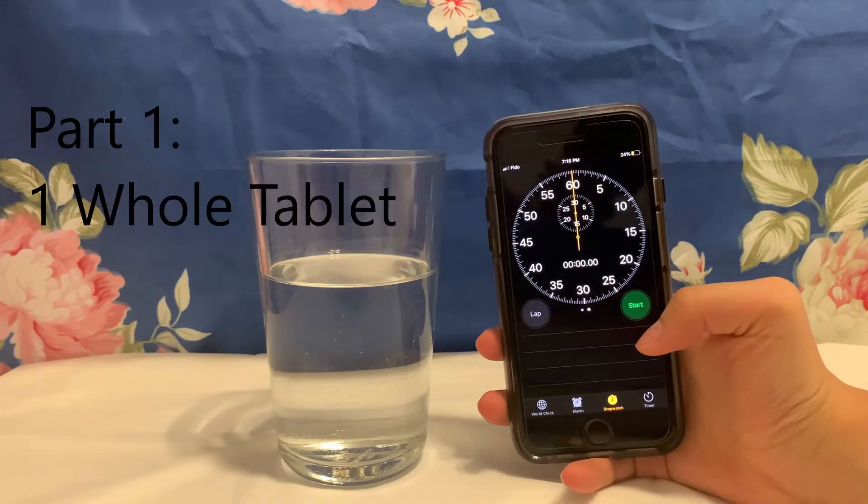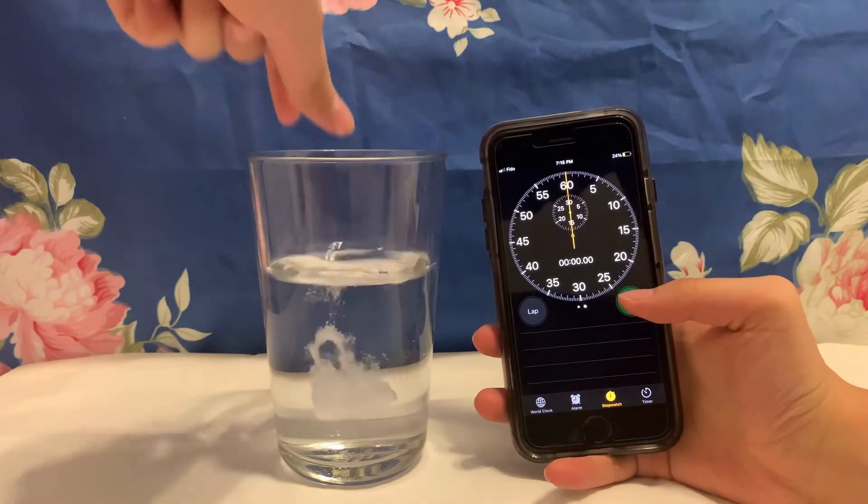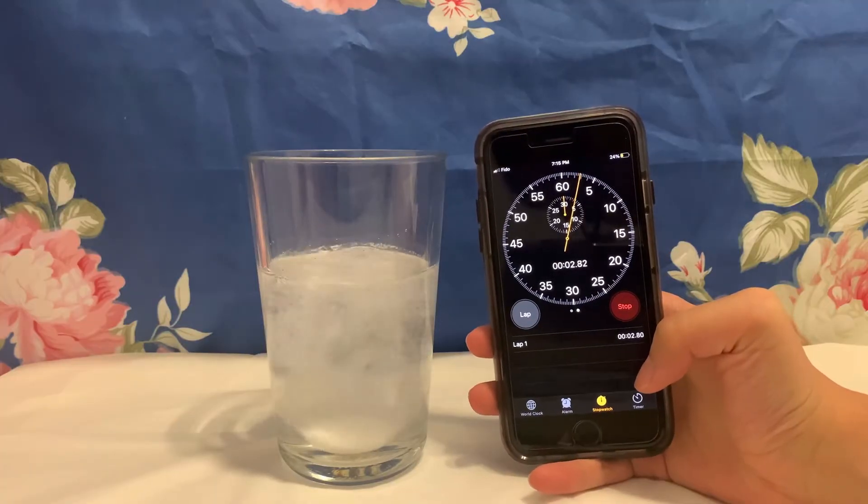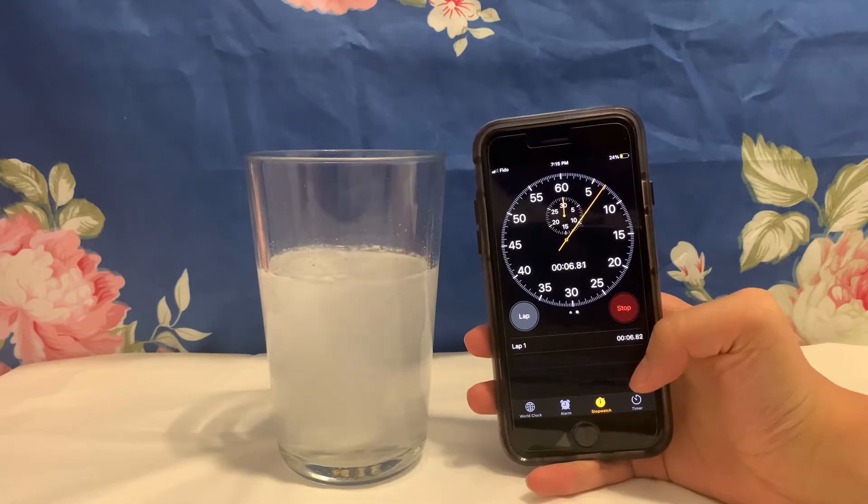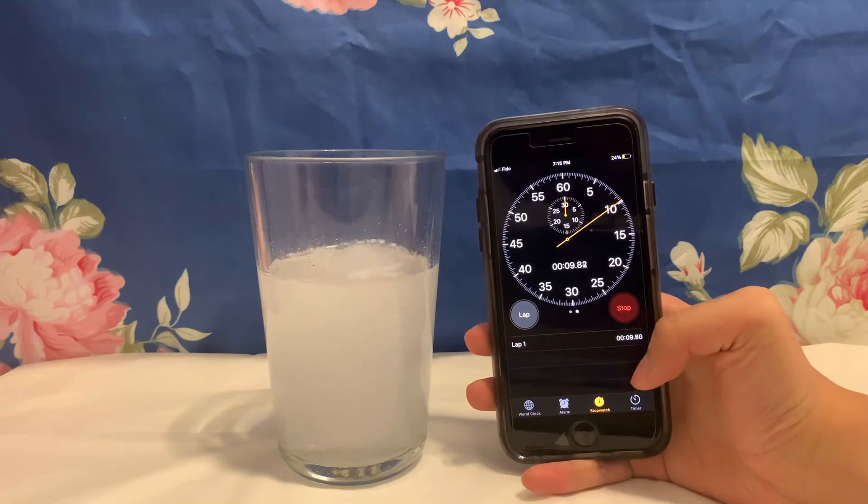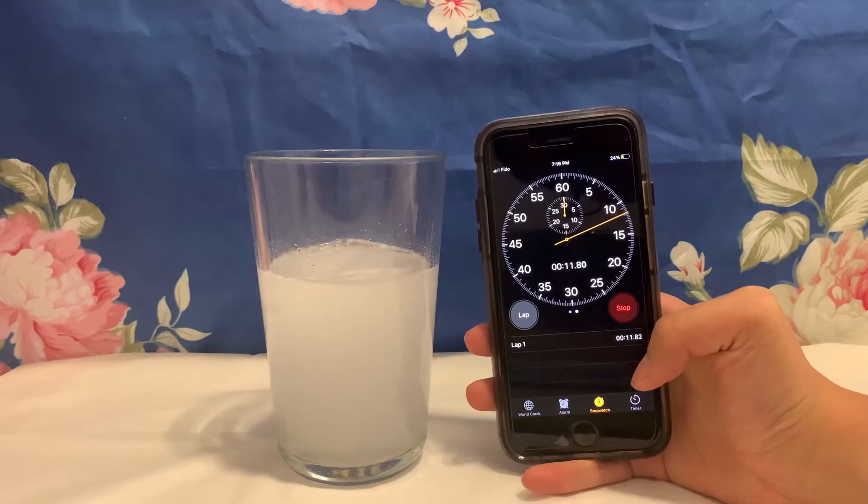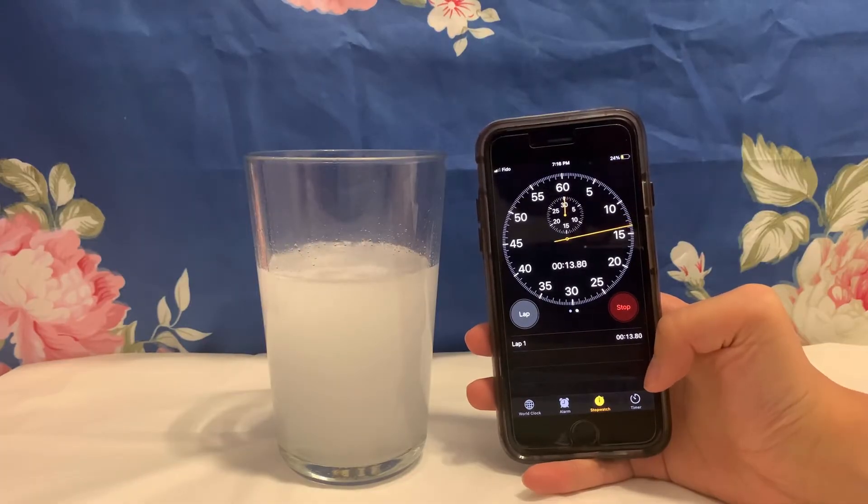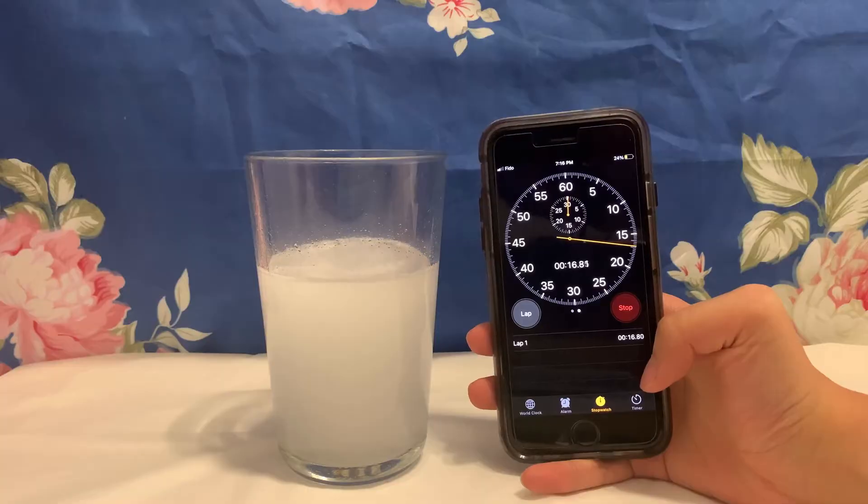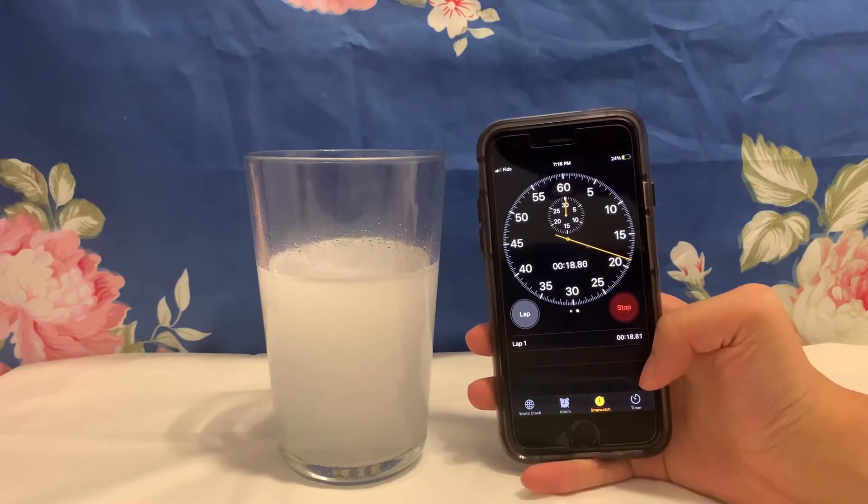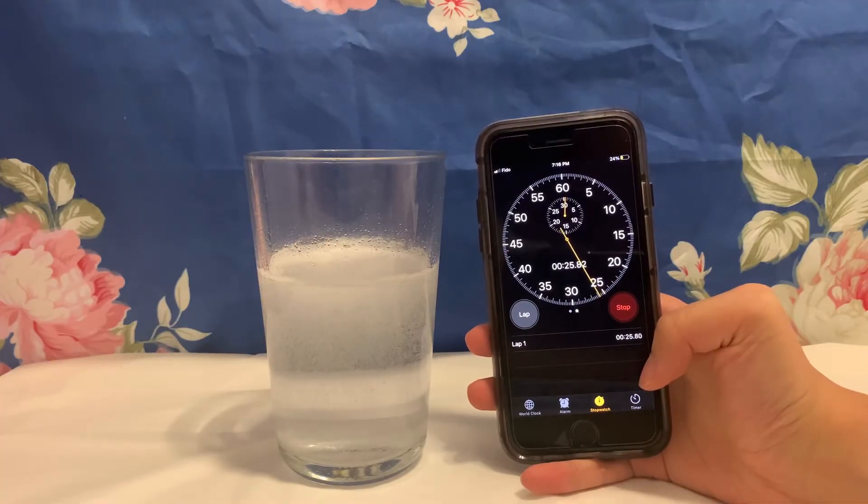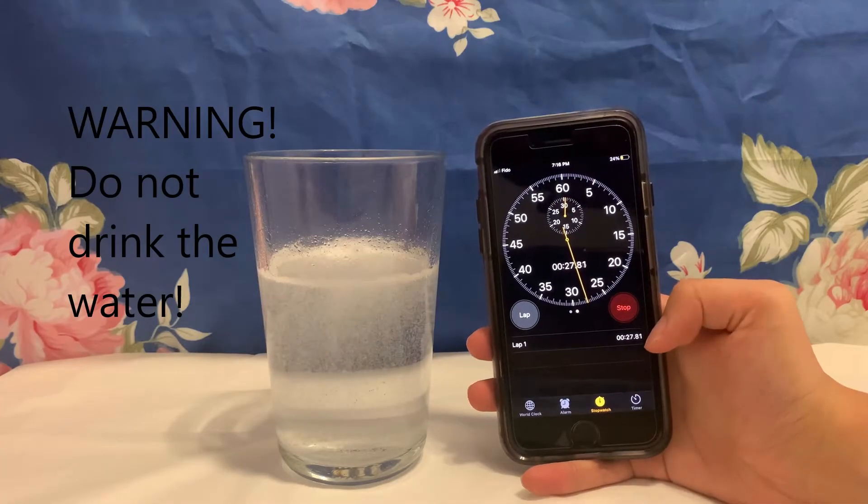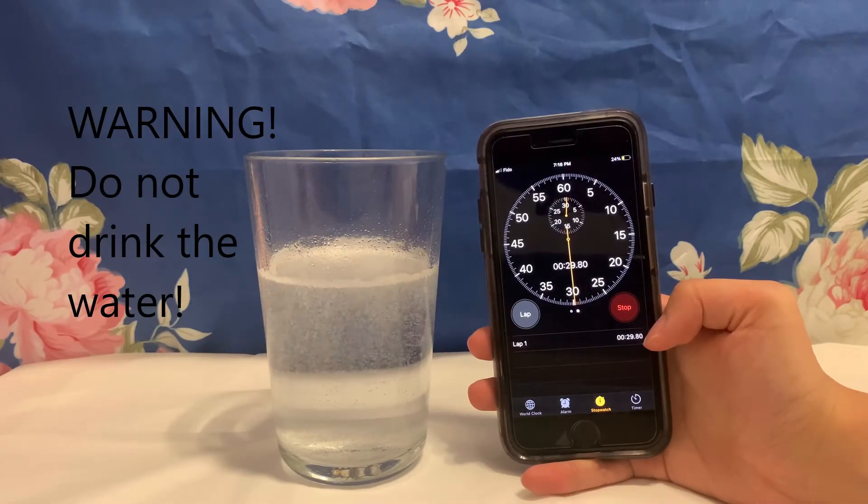Start part one of the experiment using one whole Alka-Seltzer tablet. Have your stopwatch ready and place one glass of water in front of you. Then take one Alka-Seltzer tablet and drop it into the water. If this gets too hard for you, you could always ask for help. Make sure to start your timer the moment you place the tablet in the water. As soon as you think there are no more bubbles forming, stop your timer and record the time it took for the tablet to dissolve. And don't forget, make sure to not drink any water from the experiment.